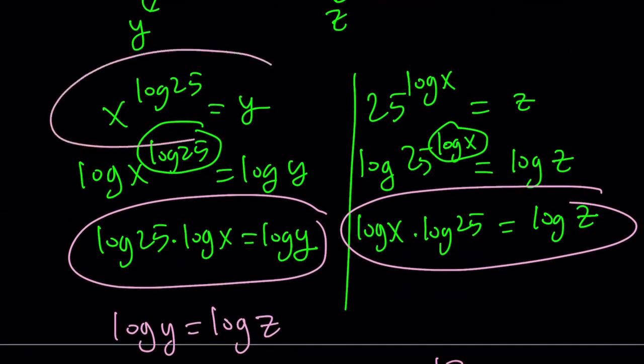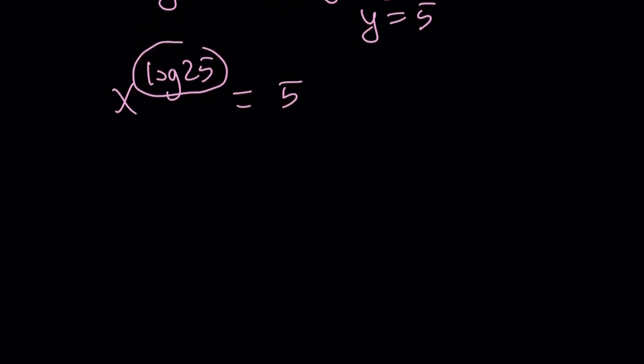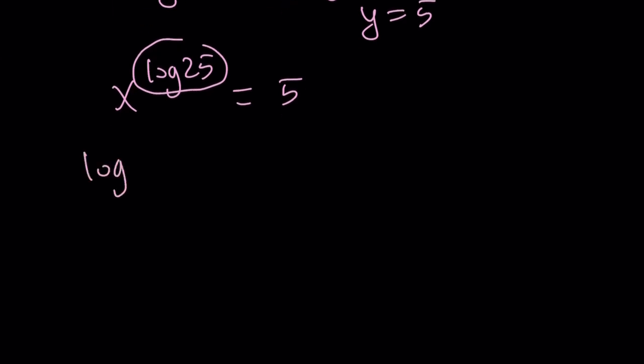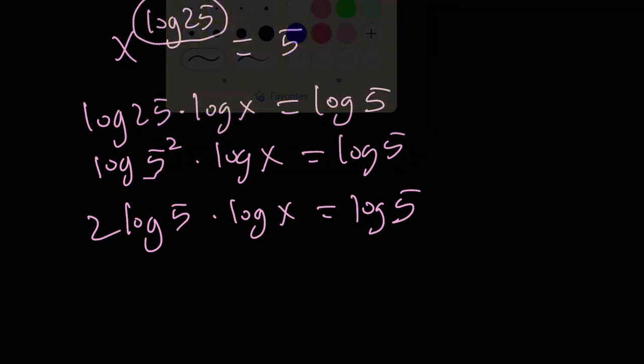But what is y? Y is equal to this one. Let's just solve this equation. How do you solve it? Again, you can log both sides. Log 25 times log x is equal to log 5. A lot of logging. But log 25 is log 5 squared, and it's just going to be written as 2 times log 5 by using the properties of logs. And log 5 is not 0, so we can go ahead and cancel that out. And that gives us 2 log x equals 1, and log x equals 1 half.